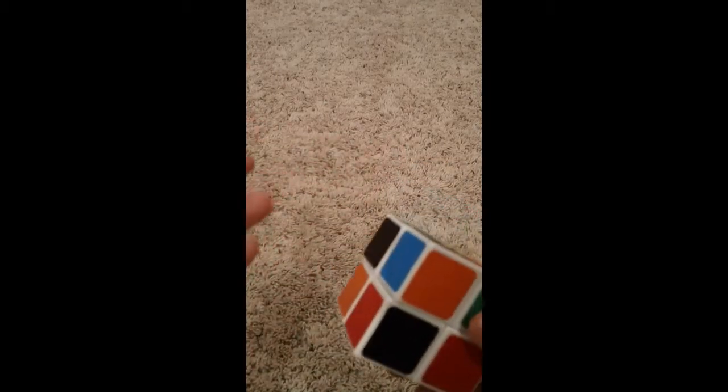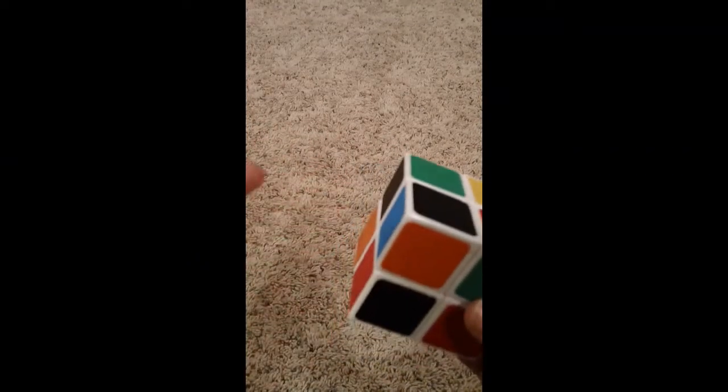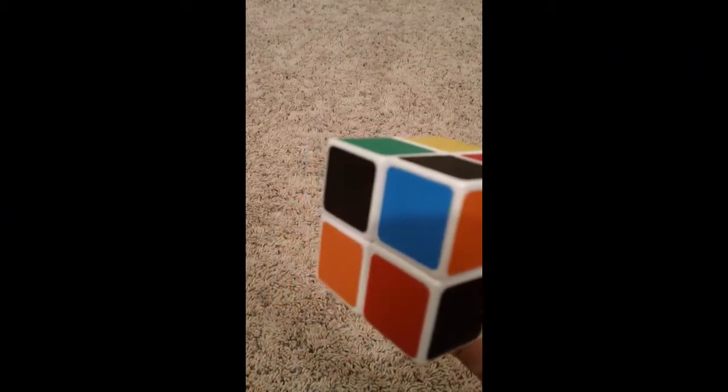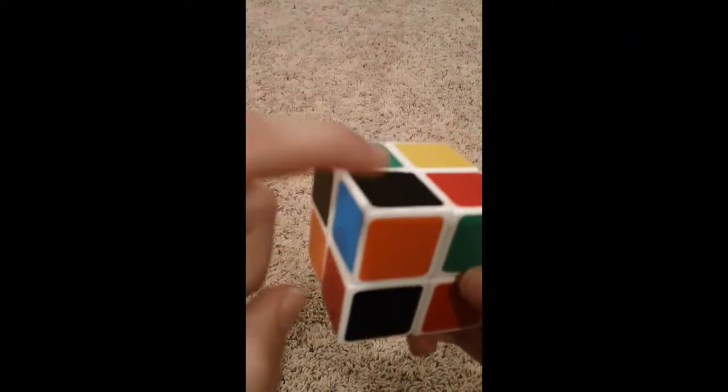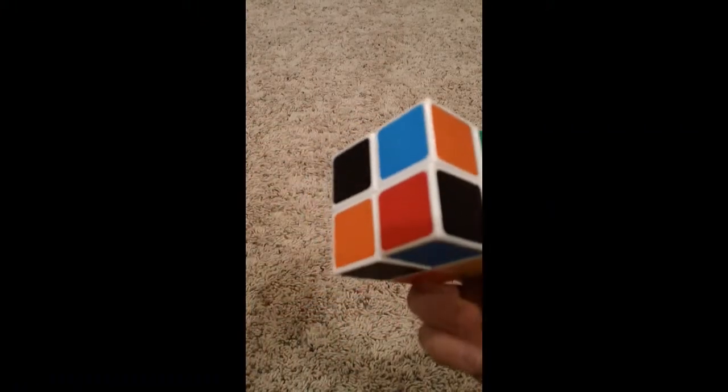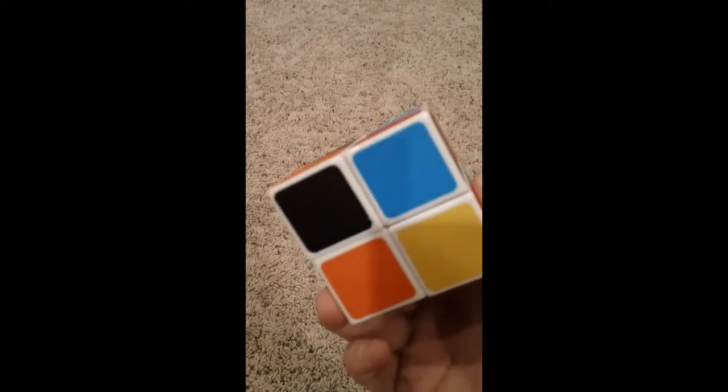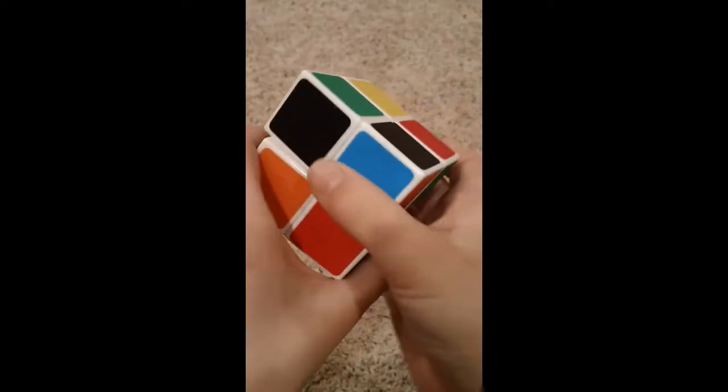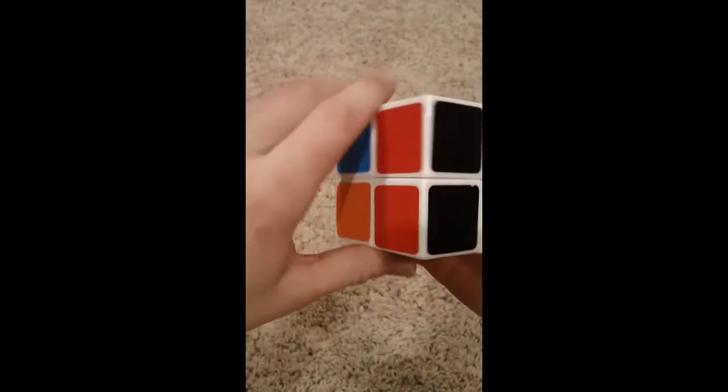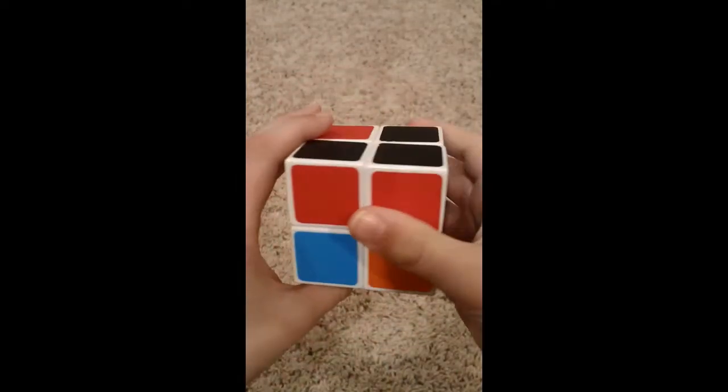So what we're going to do is find one corner, which they're all corners, but one black. It doesn't matter what color, so let's do this one right here: black, blue, and orange. Let me find the blue or orange, and here's the blue piece right here. So what we're going to do is bring it up, and look, we solved this one at the same time.